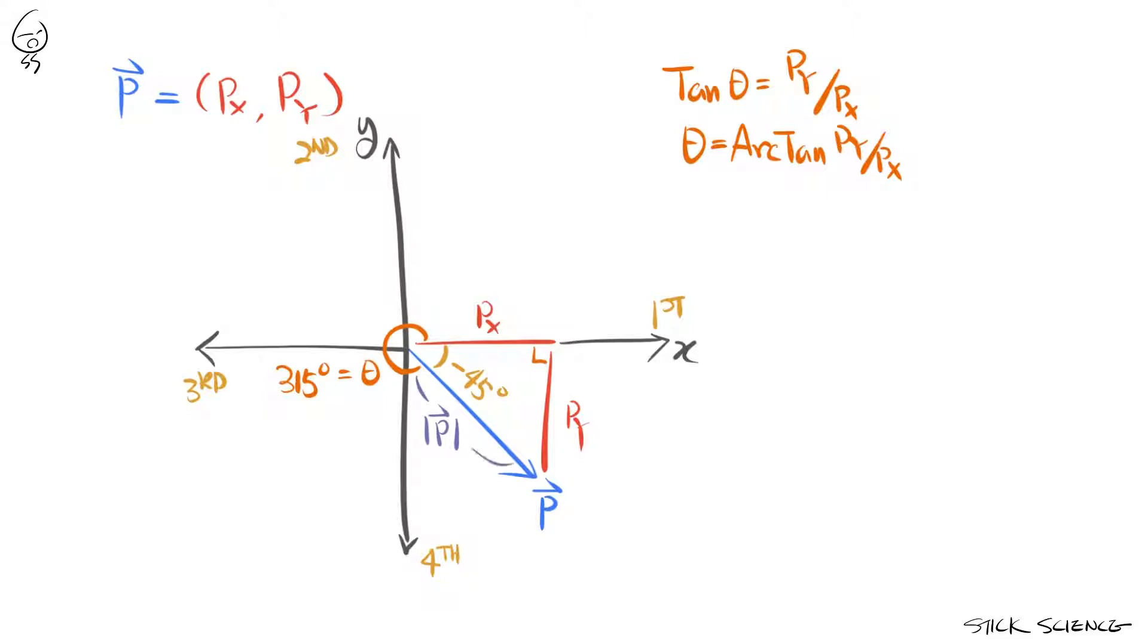Next you might wonder about the magnitude. Also easy. Since px and py are the legs of a right triangle, the hypotenuse can be calculated using the Pythagorean theorem, which tells you that the square sum of the legs are equal to the square of the hypotenuse. So the magnitude of vector p is the square root of px squared plus py squared.